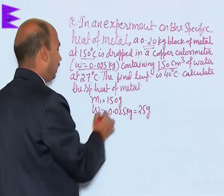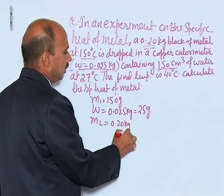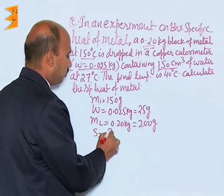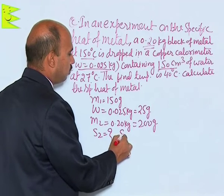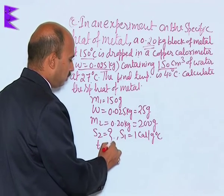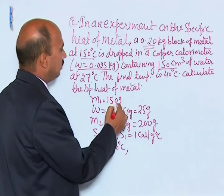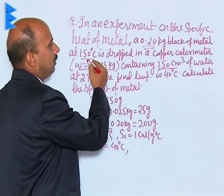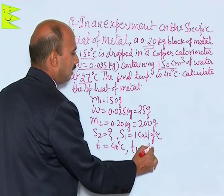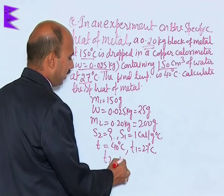Mass of the metal M2 is given as 0.20 kg, that is equal to 200 grams. We have to calculate the specific heat of the metal. S1 for water is 1 calorie per gram degree Celsius. Final temperature T is 40 degree Celsius, T1 — initial temperature of the water and calorimeter — is 27 degree Celsius, and T2 — temperature of the block — is 150 degree Celsius.